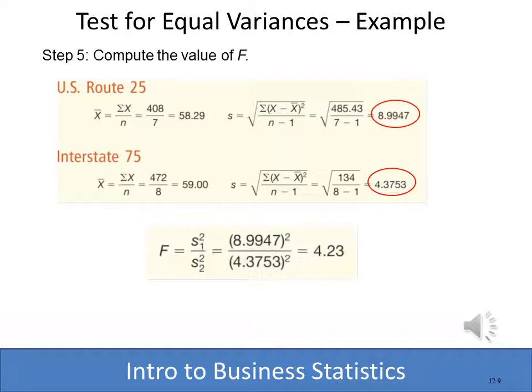Here we are actually computing the F statistic. We take the standard deviations and square them to convert them back to variances. The F statistic is the variance for sample one divided by the variance of sample two, giving us a computed F of 4.23, which we'll then compare to the critical value.